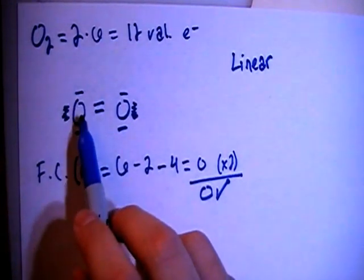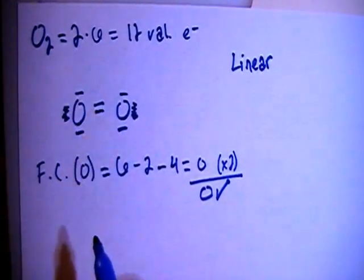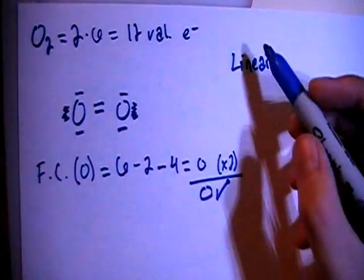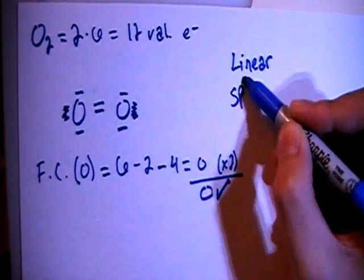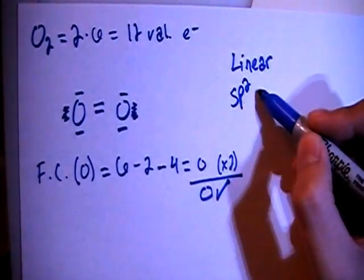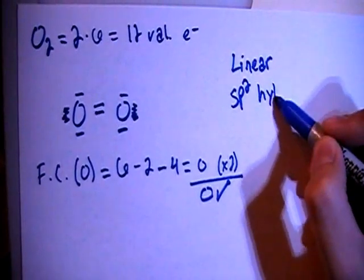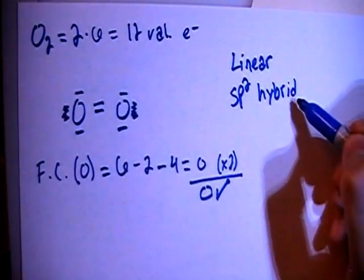In terms of hybridization, each oxygen has three electron groups or bonding sites, which means sp2, one s and two p orbitals, so sp2 hybridization.